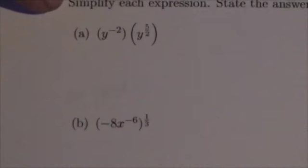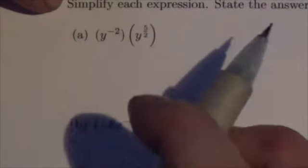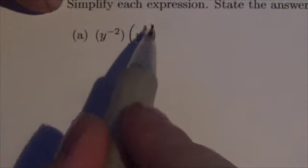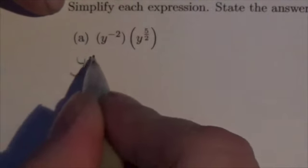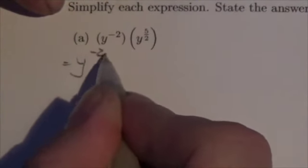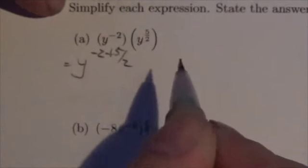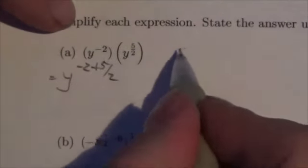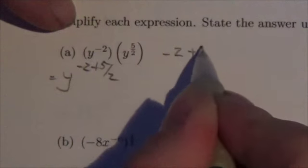Okay, well, first of all, take a look at this one here. It's a product. We're multiplying y to the negative 2 by y to the 5 halves. So what I got to do here is, when I multiply, I got to add the exponents. So it's going to be negative 2 plus 5 halves.